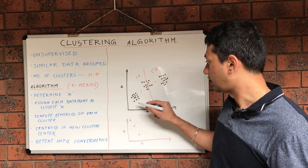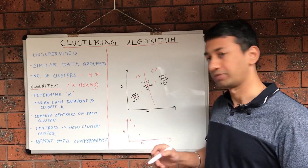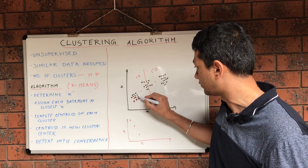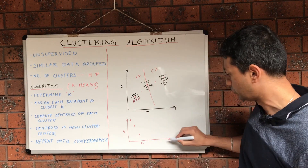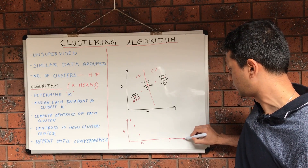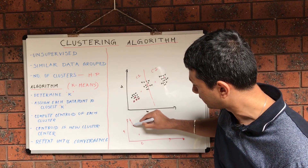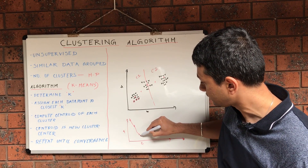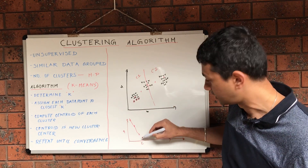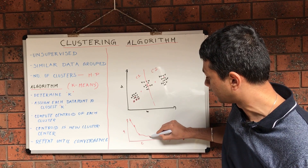When we have N clusters, where N is the number of data points, meaning each data point is considered a cluster by itself, we would reach a point where the distortion is zero. If we plot this, the chart would show that until a certain point the distortion drastically drops, and after that point the drop reduces significantly.